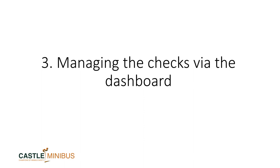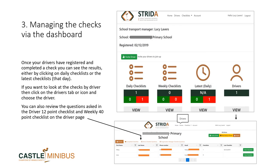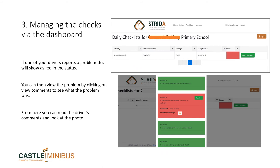The final part of these instructions is managing the checks via the dashboard. Now that you have drivers registered and checks have been completed, you will be able to see the results on your dashboard by clicking on the daily checklists, on the latest checklists, or you can look at the checklists per driver by clicking on the driver icon or tab. You then just click on the driver whose checklist you want to review. If one of your drivers has reported a problem, this will show in red status.